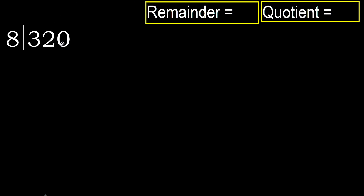320 divided by 8. 3 is less, therefore next. 32 is not less, therefore with 32: 8 multiplied by which number is nearest to 32?